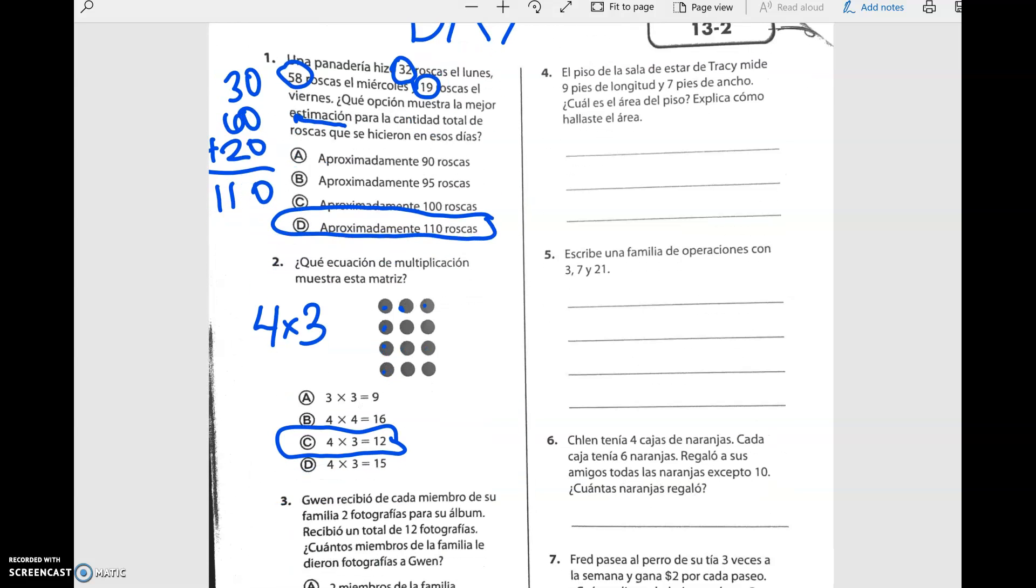Si cada uno le dio dos por no sabemos cuántos miembros de la familia y al final ella termina con 12, también podemos hacer 12 dividido por 2. We can take 12 divided by 2 y es igual a 6. Así que 6 miembros de la familia.